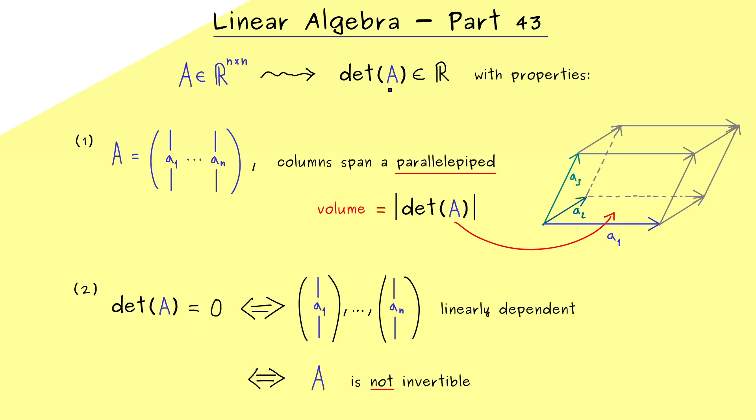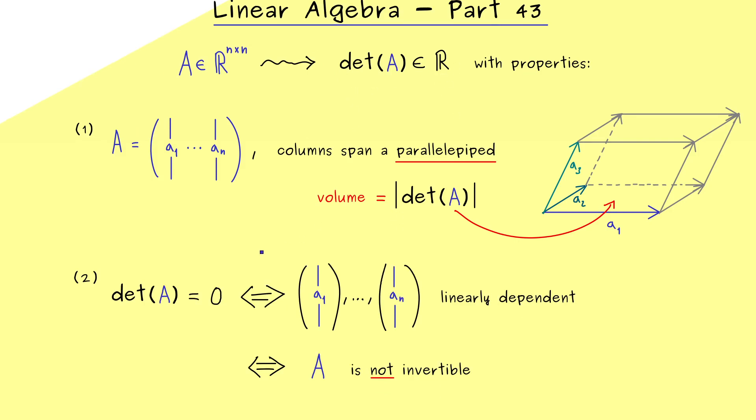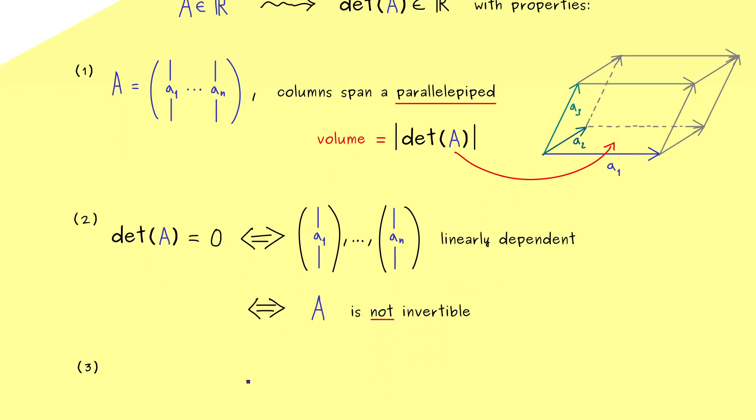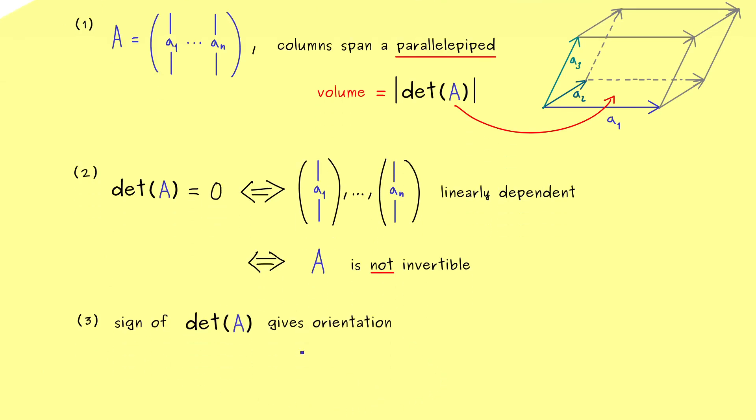But you also recognize there is one information in the determinant we didn't talk about yet. Namely, we completely ignored the sign of the determinant. And this is the third property here. The sign plus or minus of the determinant gives us an orientation. Now of course, there we have the question, what does it mean? What is an orientation of the corresponding vectors in the matrix?